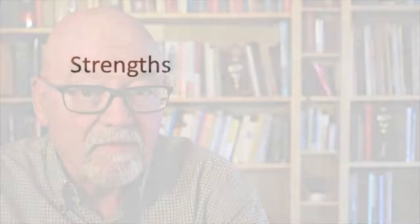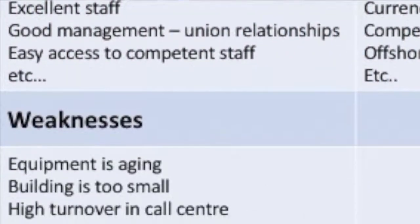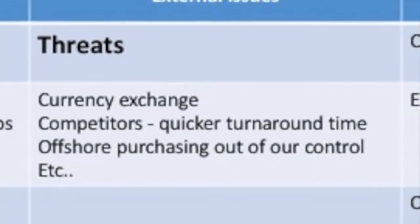One method that I've found has been really popular, helpful, and very simple to do is something that you may have already been doing in your organization called a SWOT exercise. The letters of the word SWOT stand for strengths, weaknesses, opportunities, and threats. With most organizations, the strengths, weaknesses, and opportunities are typically things that you find internally. The threats are usually things that are coming from the outside. So you could work together in a group, create a cross-functional team, do some brainstorming, and use those as guidelines for determining your context.